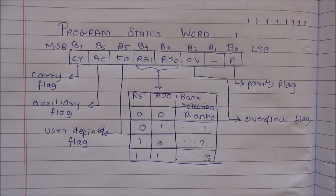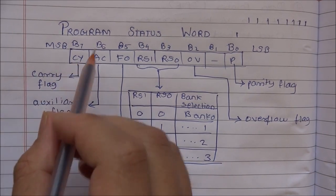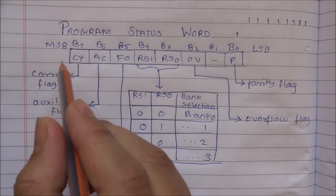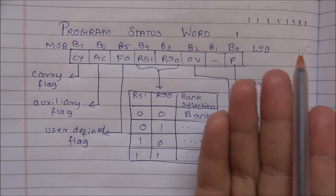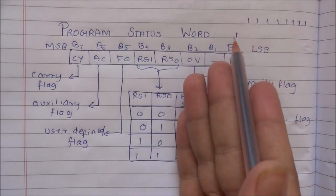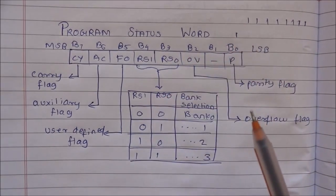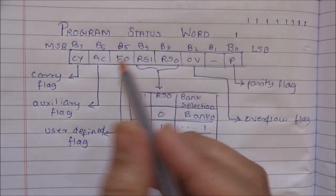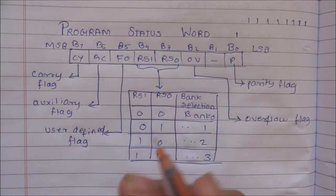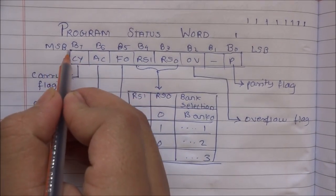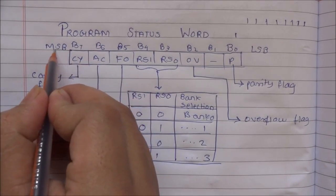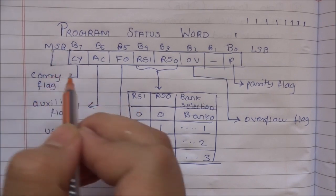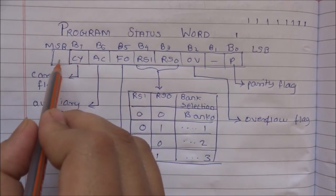The carry flag will be set when there is a carry out of these 8 bits — when it gains one extra digit, that is the ninth digit, this carry flag will be set out of the MSB. So when a ninth bit is generated, the carry flag will be set.